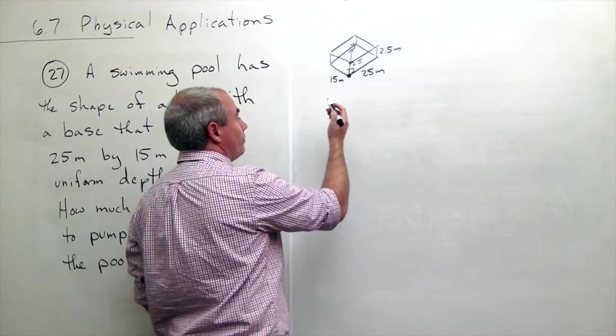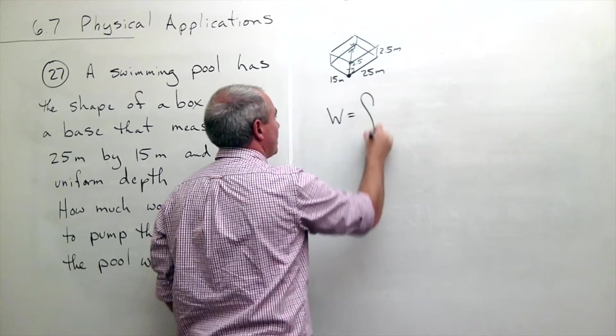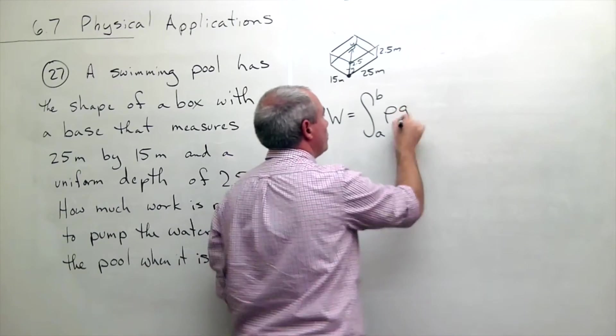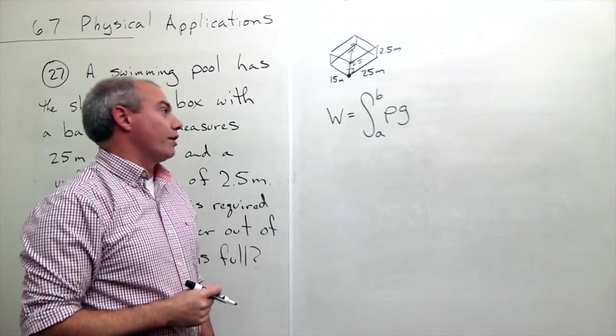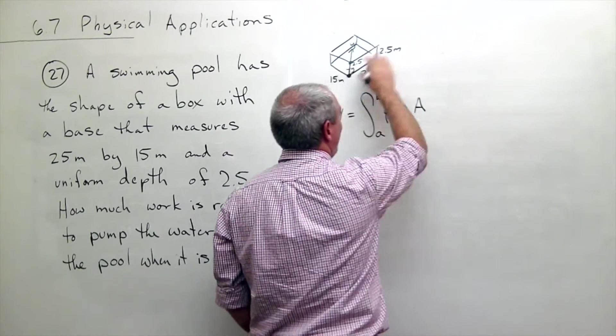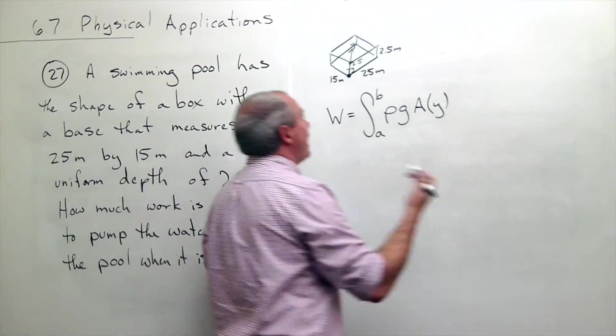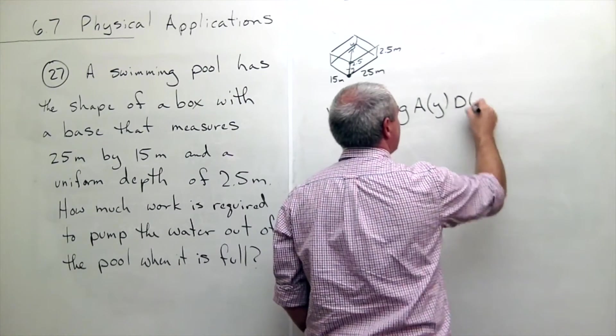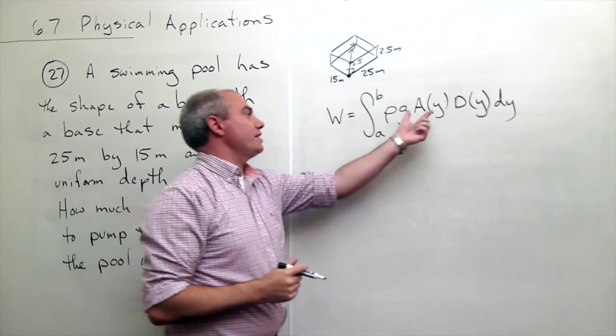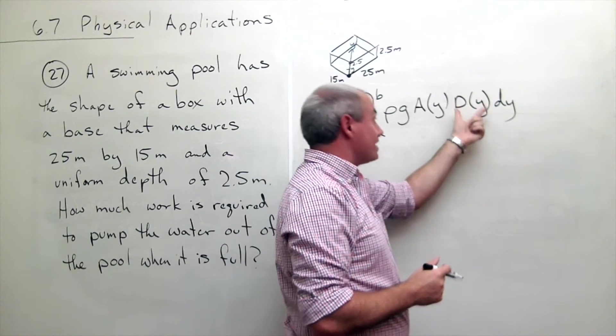Alright, so the formula that actually gives me my work is going to be the integral from a to b of the weight density ρg of the water times the area of the water at my point y times the depth that I'm sitting at when I'm at y, dy. So I've got weight density times the area when I'm at a depth y times the depth at y, dy.